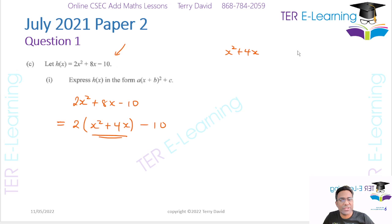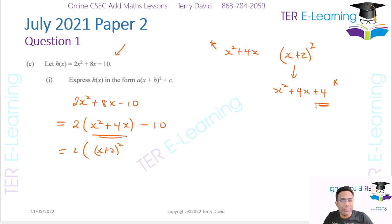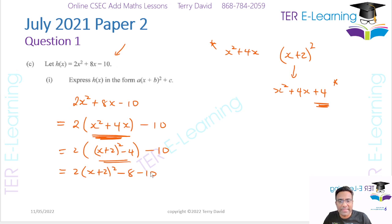I'm going to write x squared plus 4x as (x plus 2) squared. Now (x plus 2) squared expands to x squared plus 4x plus 4. To match x squared plus 4x I need to subtract 4 from it. So we have 2 times [(x plus 2) squared minus 4 minus 5], which gives 2 times [(x plus 2) squared minus 9]. The final answer is 2(x plus 2) squared minus 18.